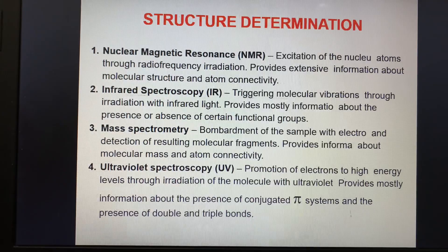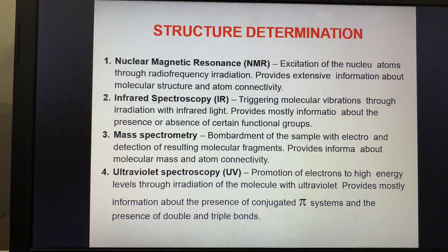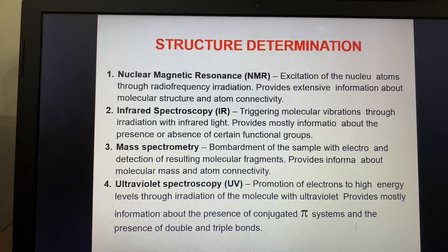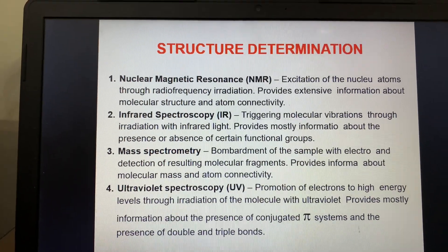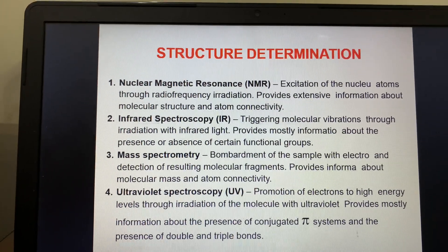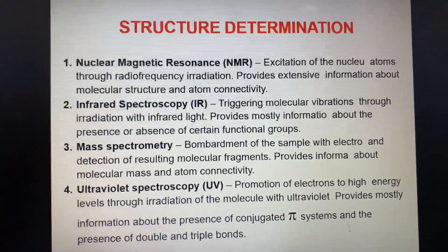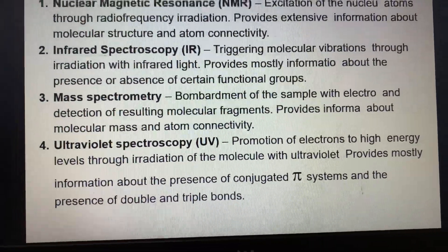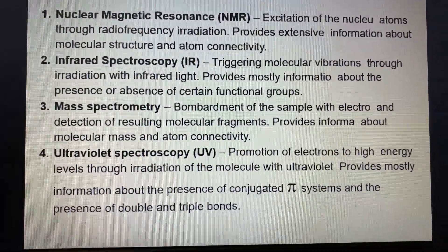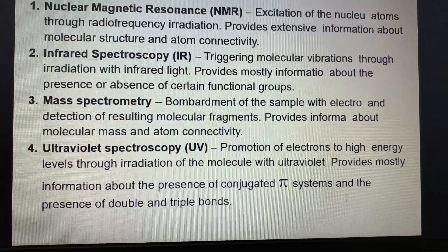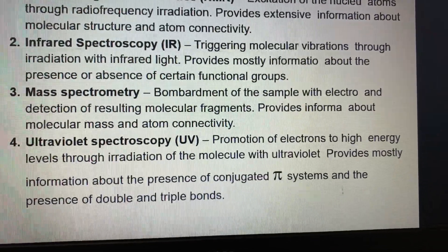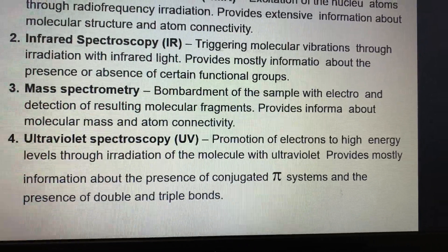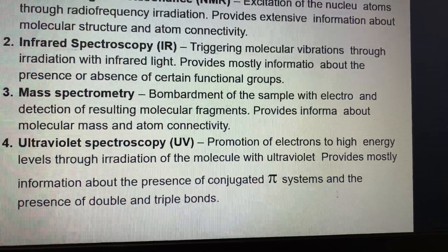NMR spectroscopy is excitation of nuclear atoms through radiofrequency irradiation. It provides extensive information about molecular structure and atom connectivity. Infrared spectroscopy triggers molecular vibrations through irradiation with infrared light in the electromagnetic spectrum. Mass spectrometry involves bombardment of the sample with electrons and detection of resulting molecular fragments.